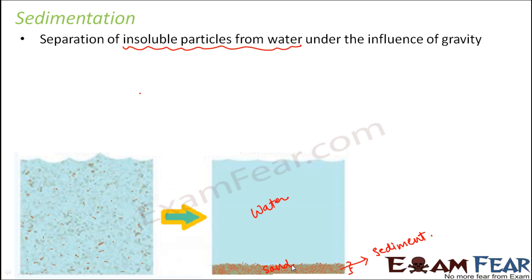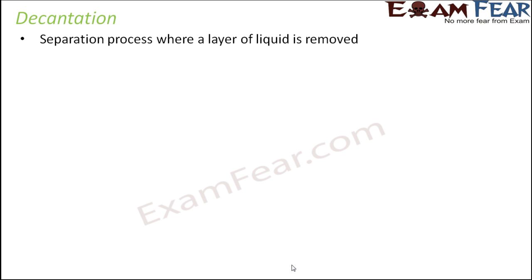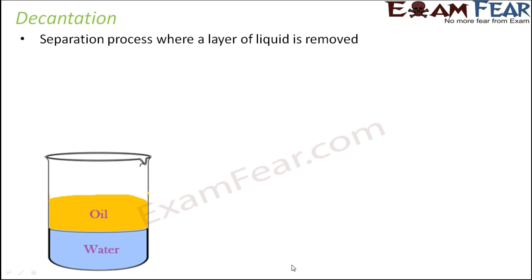The question is how do we finally separate the layers? The next step is another process called decantation. In decantation, we remove a layer of liquid to achieve the separation. Sedimentation is always followed by decantation.